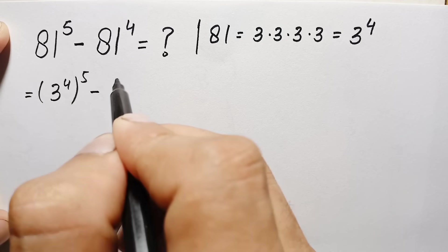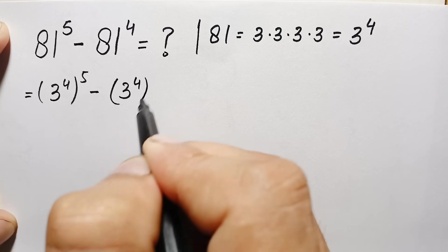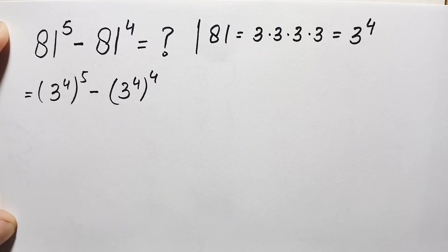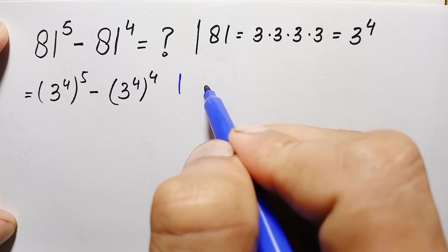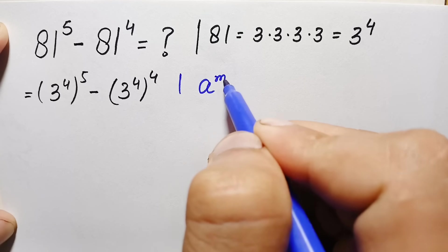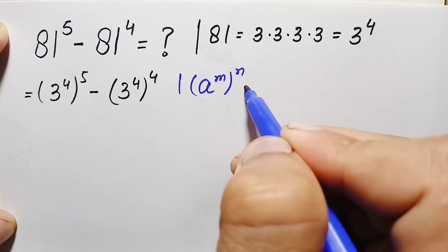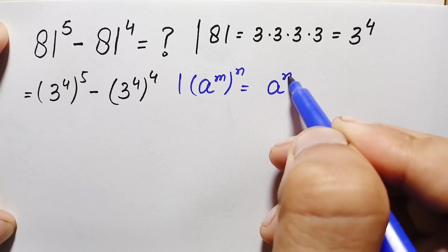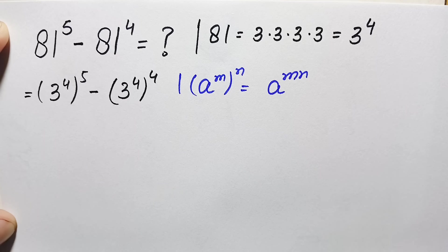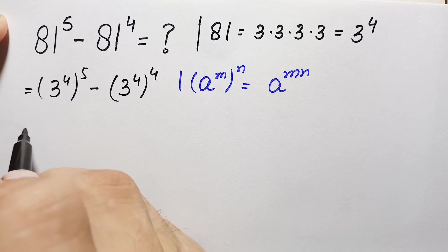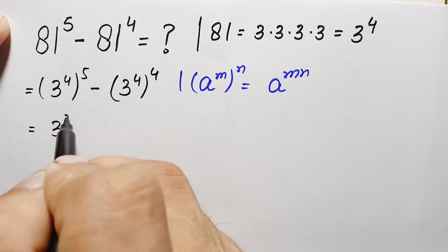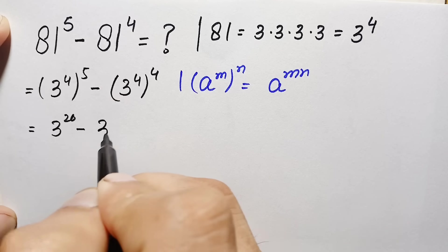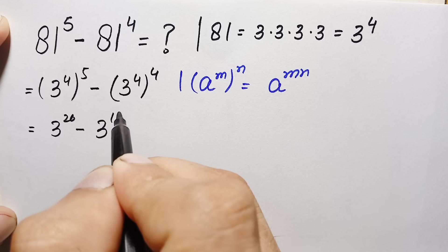This will become (3 to the power 4) to the power 5, minus (3 to the power 4) to the power 4. In both terms we will use the exponential identity: a to the power m, whole to the power n equals a to the power m times n. Using this identity, we multiply the powers: this becomes 3 to the power 20, minus 3 to the power 16.